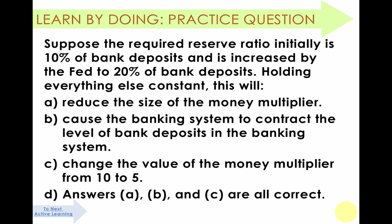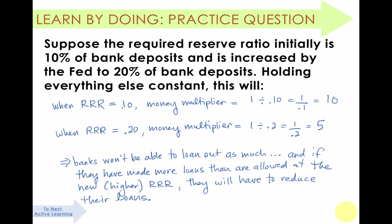Here's another question. What happens if the Federal Reserve increases the required reserve ratio from 10% to 20%? Will this: A) reduce the size of the money multiplier, B) cause the banking system to contract the level of bank deposits, C) change the value of the money multiplier from 10 to 5, or D) all of the above? The solution is all of the above.